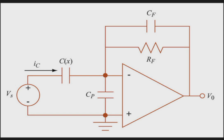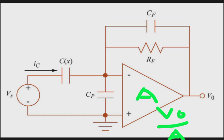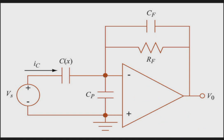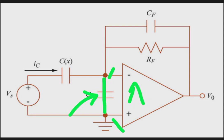The amplifier is configured in inverting mode. Since the gain of the amplifier is very high, the output divided by the gain equals VID, the differential input between the two pins of the op-amp. As the gain tends to infinity, VID — the difference between the two inputs — tends to zero. So if the positive pin is at zero potential, the negative pin also comes to zero potential, making the parasitic capacitance CP virtually short.